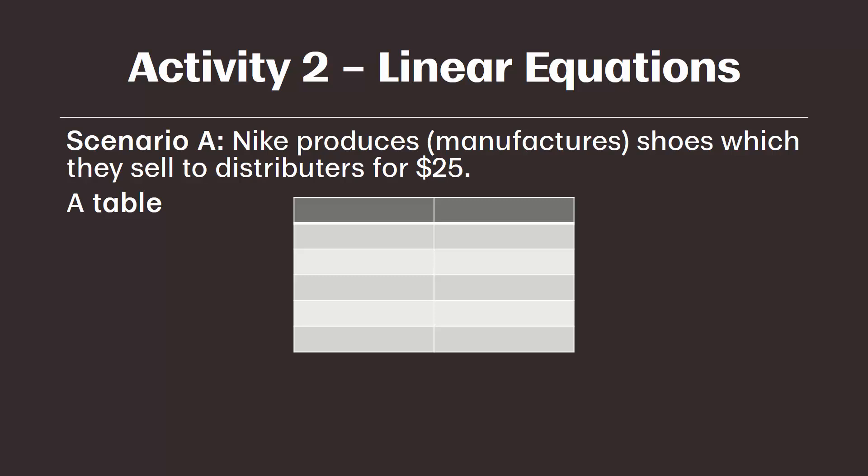We can also represent revenue as a function of quantity sold in a table format — one column for quantity, the other for revenue. If we are manually creating the table, we would calculate each value using the formula from the previous slide. So we would have zero times 25 equals zero, one times 25 equals 25, and so on. We'll use Excel in a moment to quickly do this. But go ahead and pause the video to fill in revenue at three units sold and four units sold in your note packet.